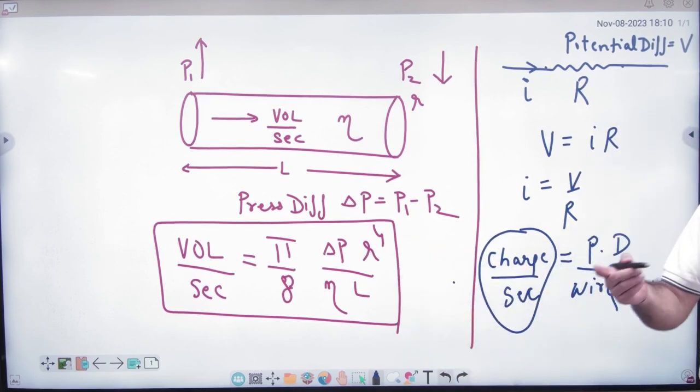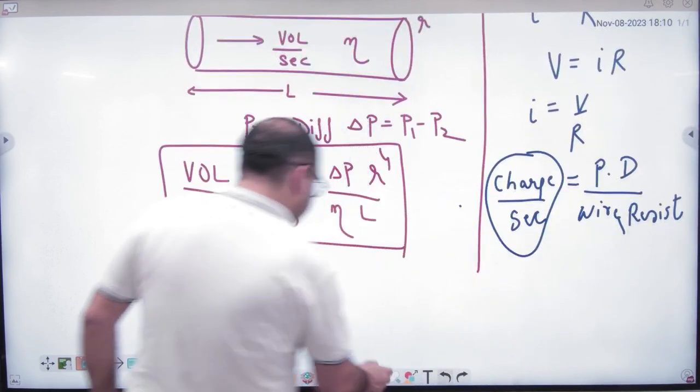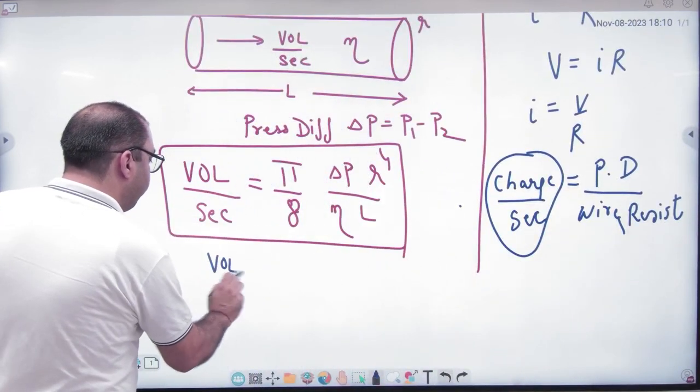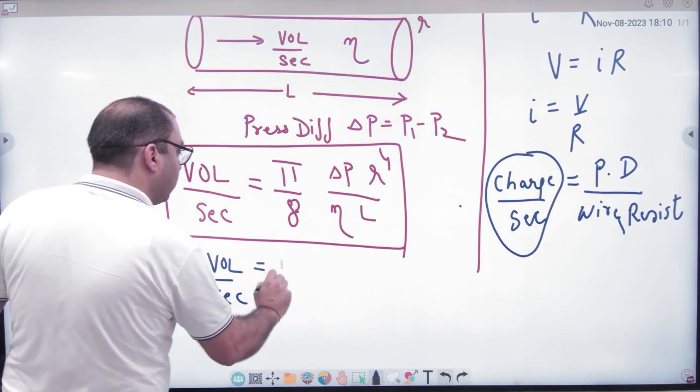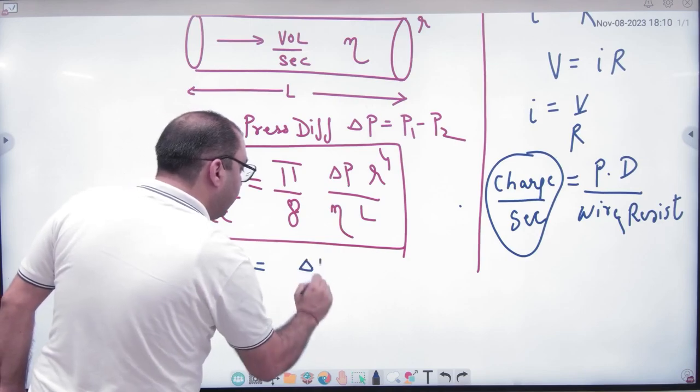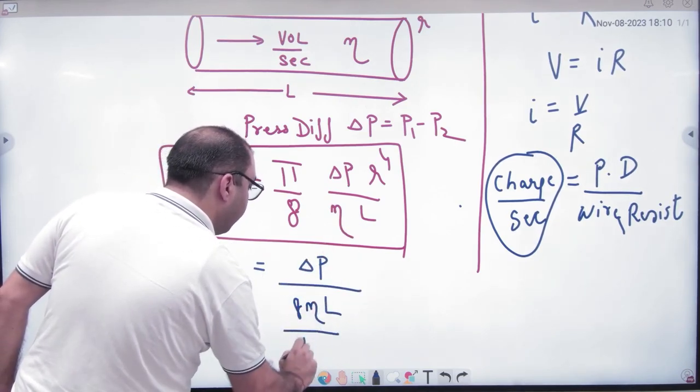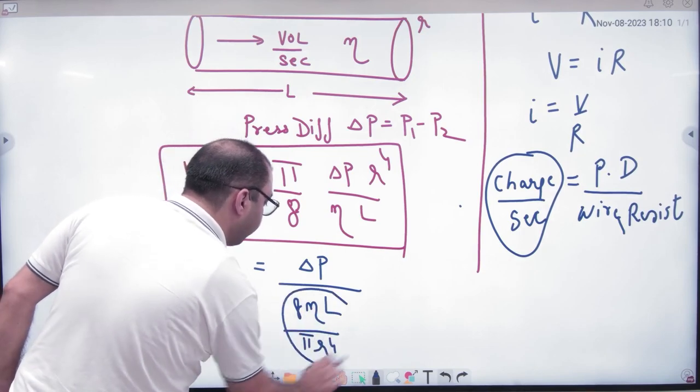What do we do in the tube? Pressure difference. And what do we do in it? Potential difference. So let's work. I'm going to modify it a little more. Volume flowing per second will be equal to, here, delta P, 8 eta L, pi R power 4. I'm going to take it down.